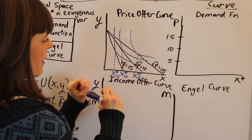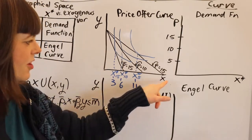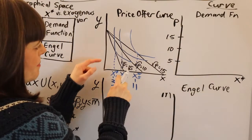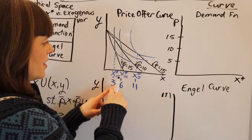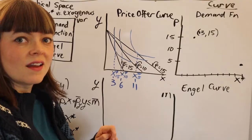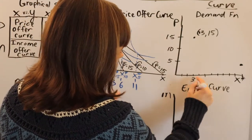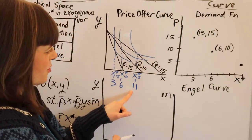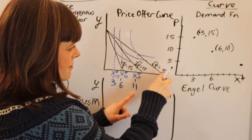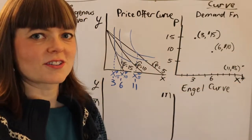I've found three optimal responses. One is associated with the budget constraint with a price of $15 — we're buying 3 of good x. The next is with a price of $10 — we're buying 6 of good x. And the final optimized choice is with a price of $5 — we're buying 11 of good x. So I'm going to map these pairs over to the demand curve: we buy 3 when the price is $15, we buy 6 when the price is $10, and we buy 11 when the price is $5.